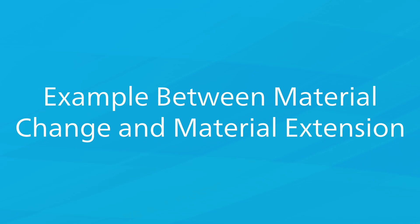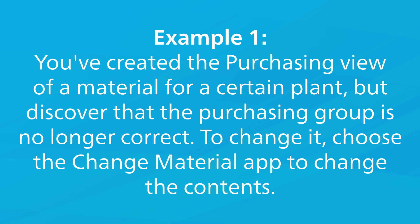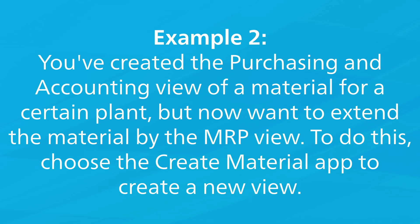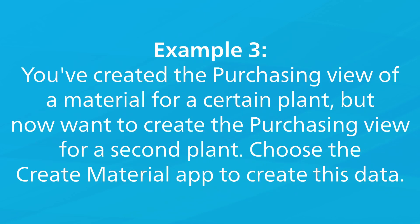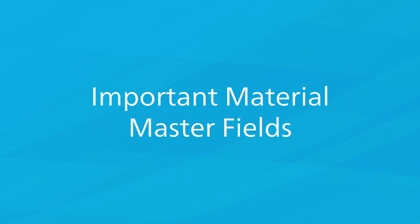The following examples illustrate the difference between material change and material extension. If you've created the purchasing view of a material for a certain plant but discover that the purchasing group is no longer correct, choose the Change Material app to change the contents. If you've created the purchasing and accounting views for a plant but now want to extend the material by the MRP view, choose the Create Material app to create a new view. If you want to create the purchasing view for a second plant, also choose the Create Material app.